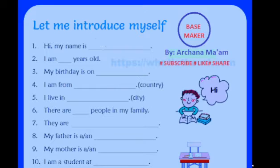In the next line, you have to explain your age. Because you all are kids, so you will say 'I am 6 years old,' '7 years old,' '8 years old' — whatever age you are, you will say it here.